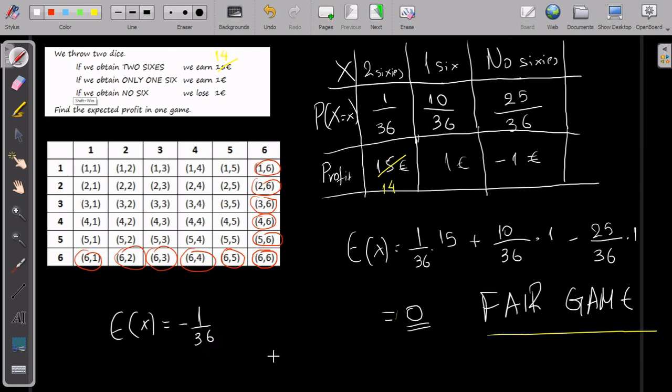In other words, if I play this game thirty-six thousand times, for example, I will lose one thousand euros. So basically, it is not a fair game. If my expected profit is negative, it means I lose money on average. If it's positive, on the other hand, it means I earn money. So it is not a fair game, but it's fair for the player.